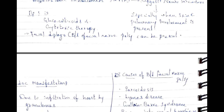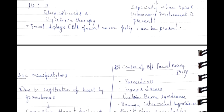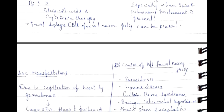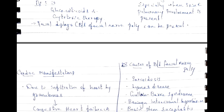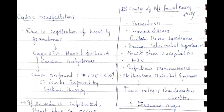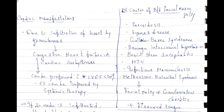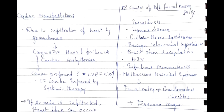Facial diplegia — bilateral facial nerve palsy — can be present. Causes of bilateral facial nerve palsy include: sarcoidosis, Lyme disease, Guillain-Barré syndrome, benign intracranial hypertension, brainstem encephalitis, HIV, infectious mononucleosis, and Melkersson-Rosenthal syndrome (facial palsy + granulomatous cheilitis + fissured tongue).